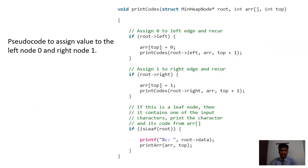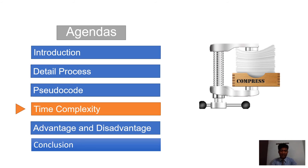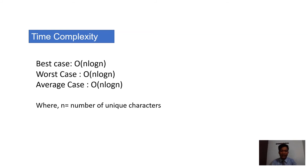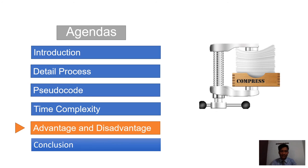Now, the time complexity of this method. The best case, worst case, and average case for the Huffman method is O(n log n), where n is the number of unique characters.